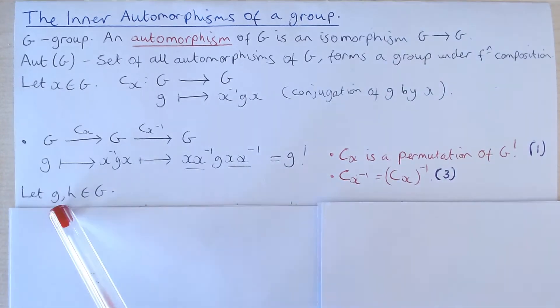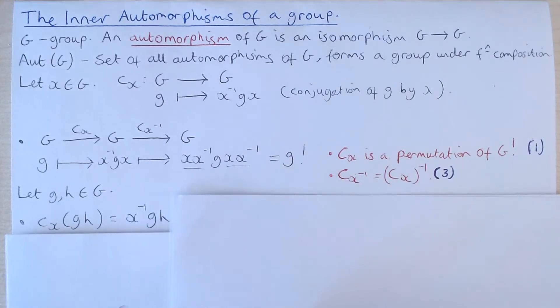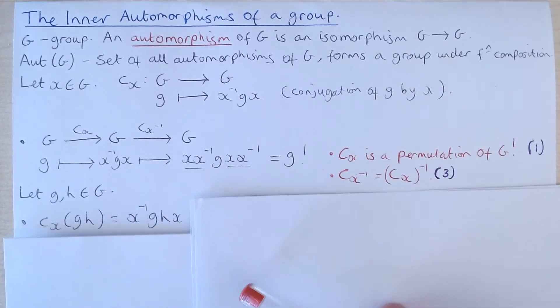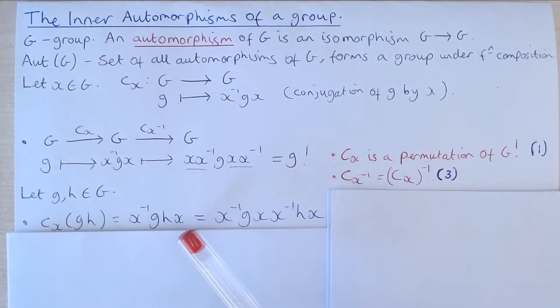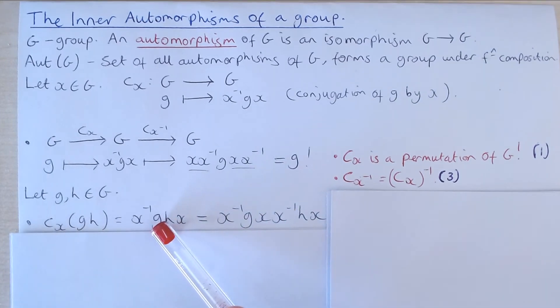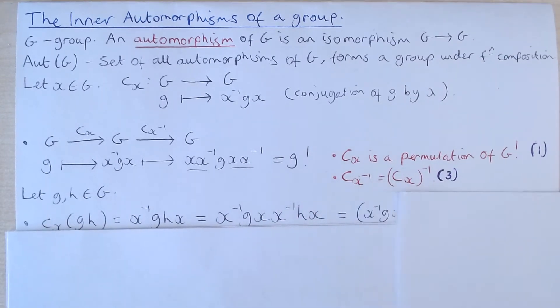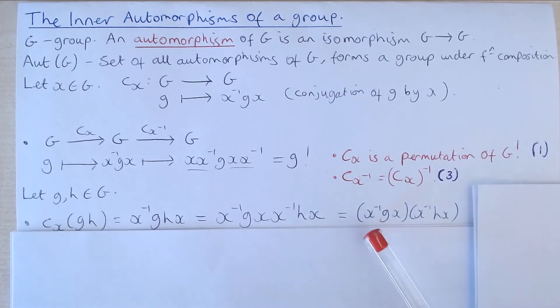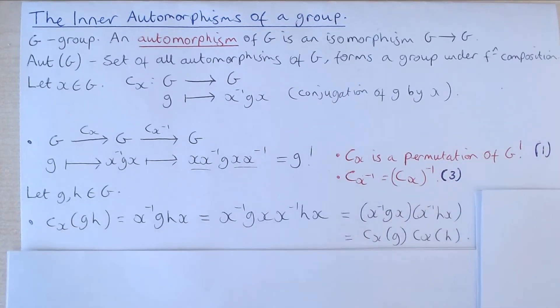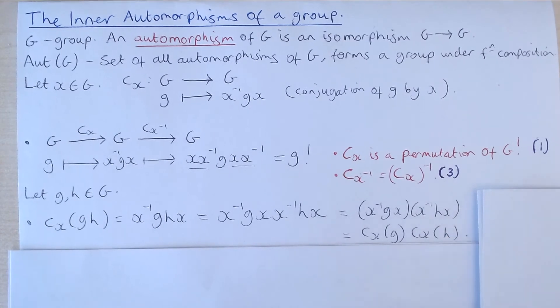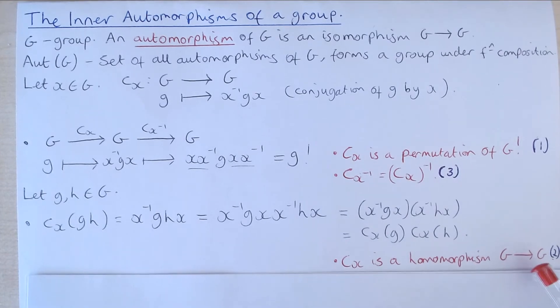Now let G and H be elements of our group G. CX takes their product to X inverse GHX which is equal to X inverse GX times X inverse HX. And what we've done here is we've inserted an identity element in the middle here and expanded it as XX inverse. When we collect these terms, what we notice is that this is just equal to X inverse GX times X inverse HX which is equal to CX of G times CX of H. So what we've actually shown here is that CX is a homomorphism from G to itself.